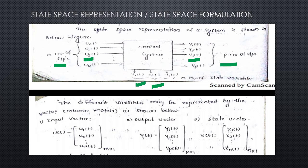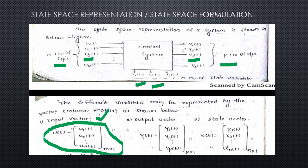In state space, the input variables are denoted by the letter u. If we place all the input variables in a column matrix, then that matrix is known as the input vector. The input vector is a column matrix whose elements are the input variables: u1(t), u2(t), and so on up to um(t), if the system consists of m number of input variables.